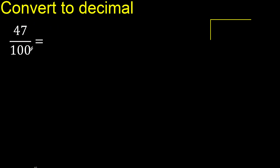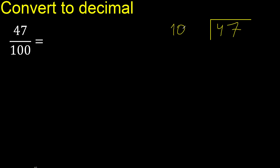47 divided by 100. 47 is less, therefore complete — always complete with 0. Here: 0 point.